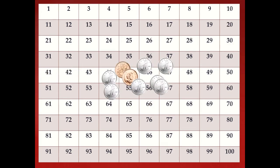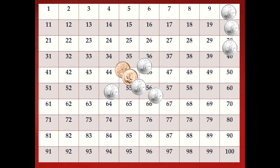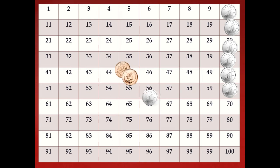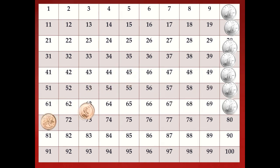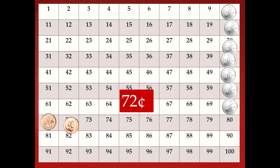We're going to count again. We always start with our largest amount of a coin, and our dime is worth the most, so that's what we're going to start with: ten, twenty, thirty, forty, fifty, sixty, seventy, seventy-one, seventy-two. This is seventy-two cents. Well done.